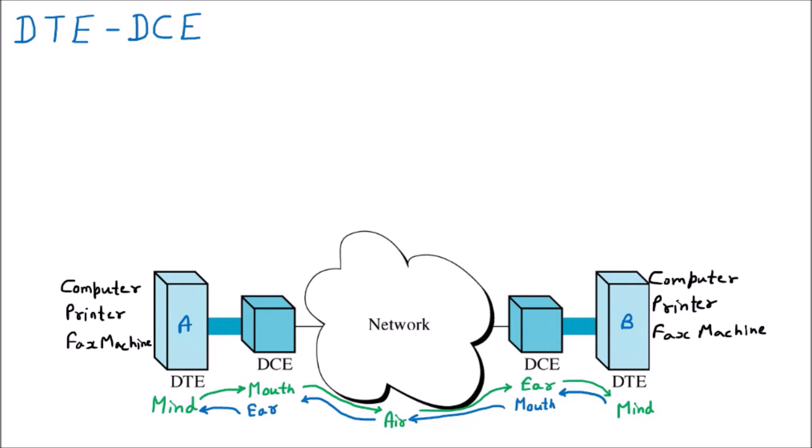Now what is the DCE? DCE includes all the modulators and demodulators we are using — modulator to modulate the signals, demodulator to demodulate the signals. Maybe on one side we use a modulator and on the other side a demodulator. So DTE are all the devices majorly for processing data — computer, printer, and fax machines. DCE are the devices which only transmit the data without understanding it, which are the modulator and demodulator.